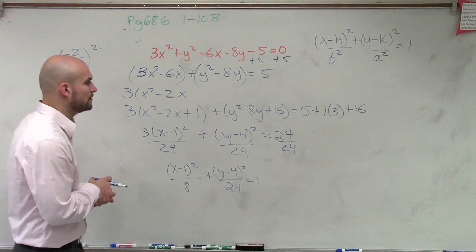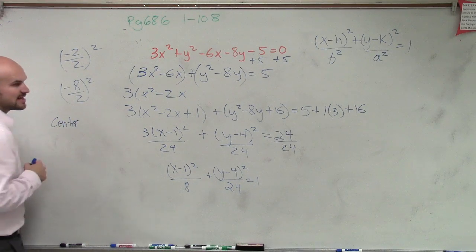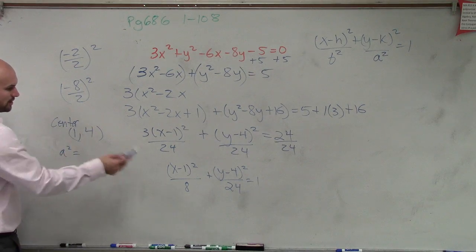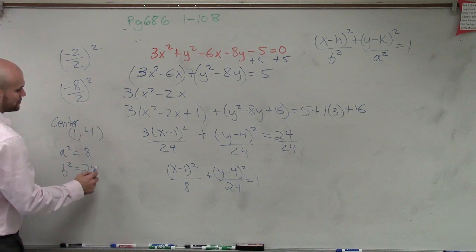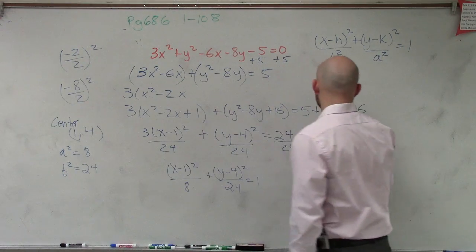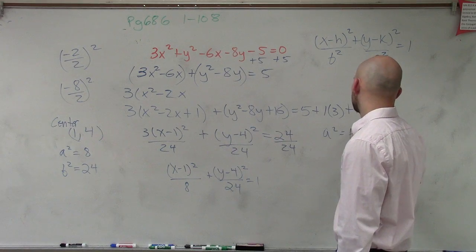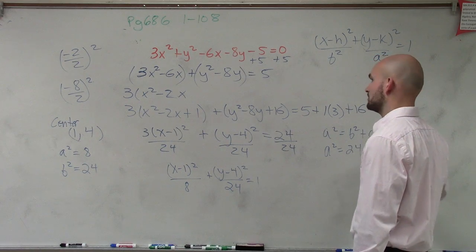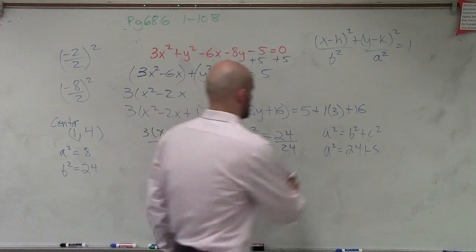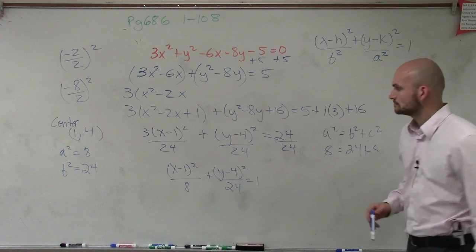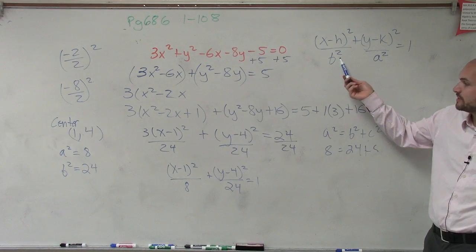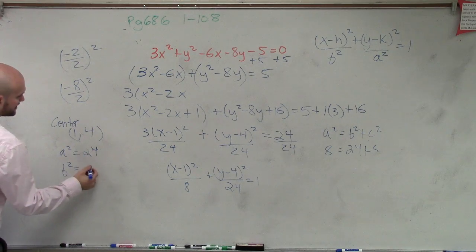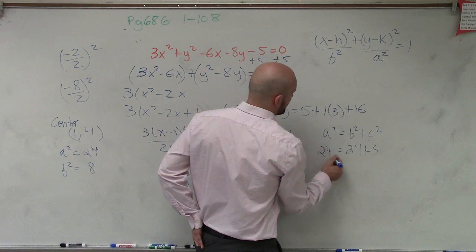So now we can determine our center. Our center is at (1, 4). Now we know a squared is going to equal 24 and b squared equals 8. Remember, to find our c squared, we know that a squared equals b squared plus c squared. So 24 equals 8 plus c squared — thank you for the correction, a squared is 24 and b squared is 8.